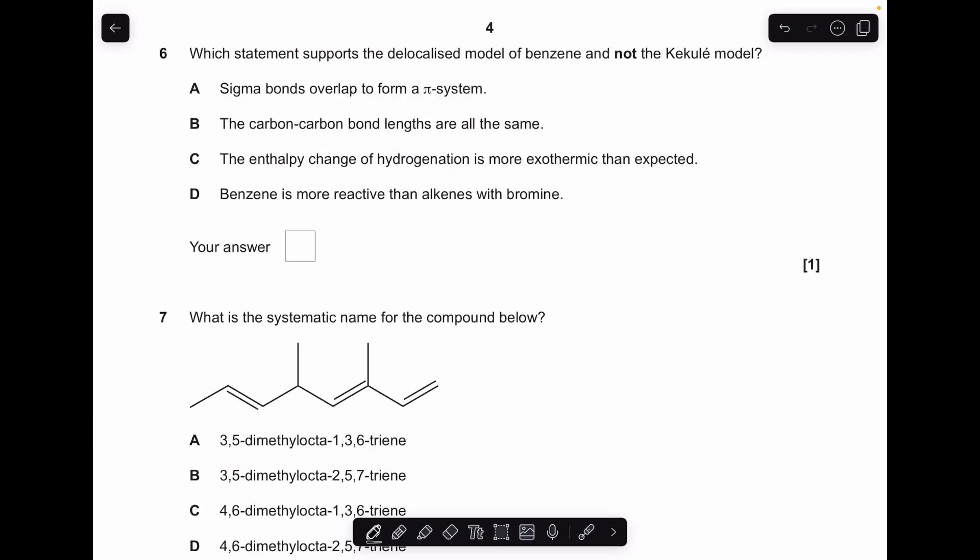Moving on to number six. Which statement supports the delocalized model of benzene and not the Kekulé model? So let's see if A is right. Sigma bonds overlap to form a pi system? No, that's wrong, it's p orbitals that do that, so A is wrong. Carbon-carbon bond lengths are all the same? Yep, that is the right answer.